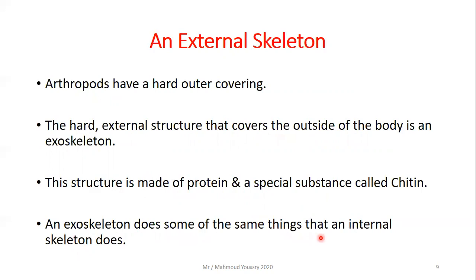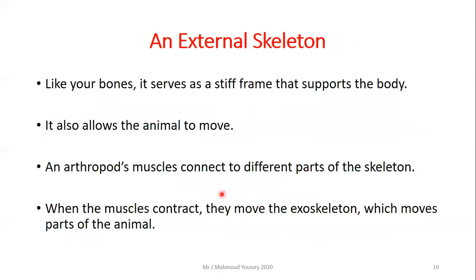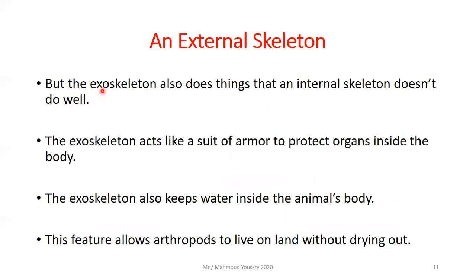An exoskeleton does some of the same things that an internal skeleton does. Like your bones, it serves as a stiff frame that supports the body and allows the animal to move. The muscles connect to different parts of the skeleton; when they contract, they move the exoskeleton, which moves parts of the animal.